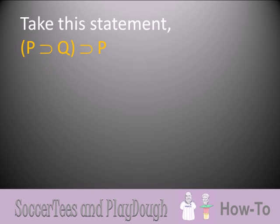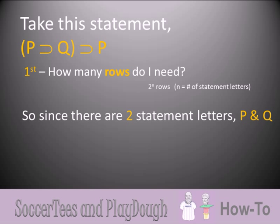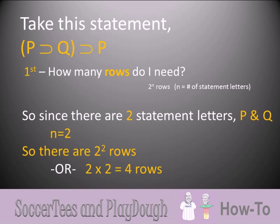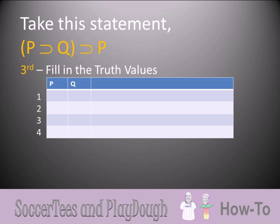Let's do this one more time at full speed with a new statement: 'If if P then Q, then P.' First, how many rows? We have two statement letters, P and Q, so n equals 2, giving us 2 squared, which is 4 rows. Next, we create the statement columns alphabetically. Then we fill in the truth values: in the P column, first two rows true and next two false; for the Q column, we divide in half again — one true, one false — and repeat until the table is complete.